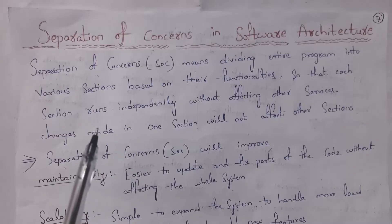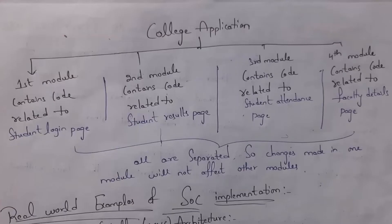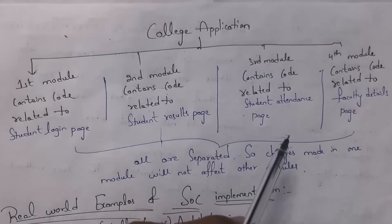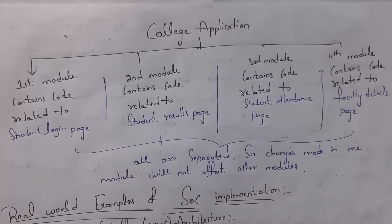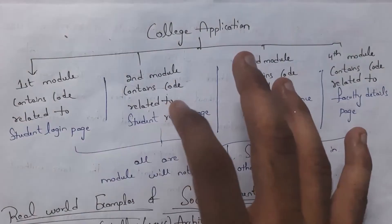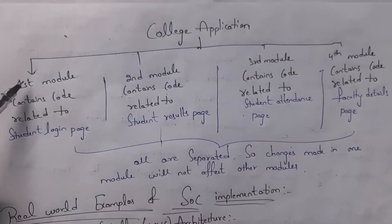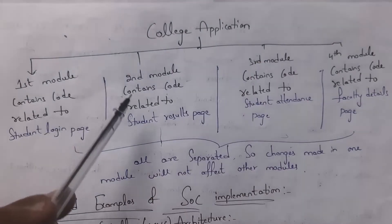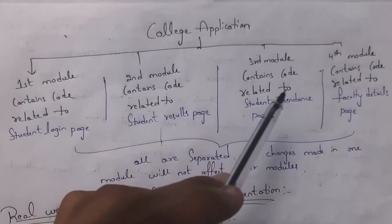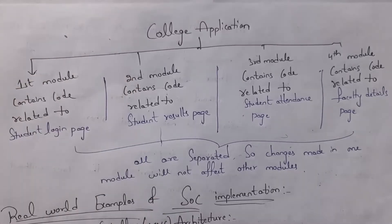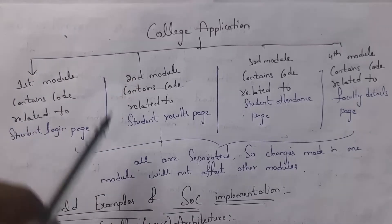I will give an example so that you can clearly understand this definition. For example, I want to create a Kali application. Let us say the Kali application contains four pages: student login page, student results page, student attendance page, and faculty details page. So instead of writing this complete code in one place, I will divide the complete code into four modules. First module contains code related to student login page, second module contains code related to student results page, third module contains code related to student attendance page, and fourth module contains code related to faculty details page. I will store these four modules separately in different folders.